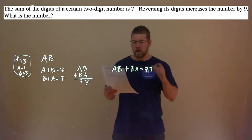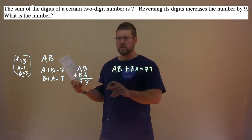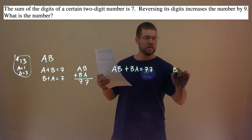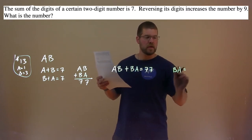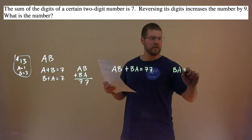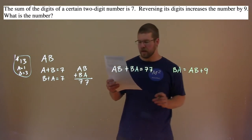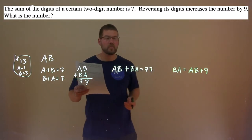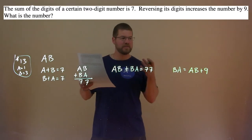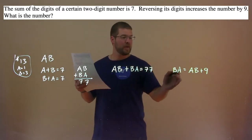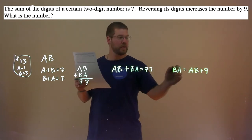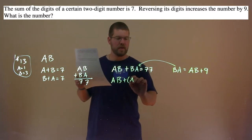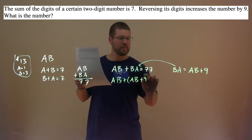We also know that reversing the digits increases the number by 9. So B,A equals A,B plus 9. Now we have two equations. We take B,A — we know it to be A,B plus 9 — and plug it into the B,A in the first equation. So A,B plus (A,B plus 9) equals 77.